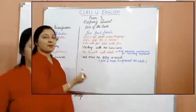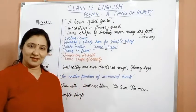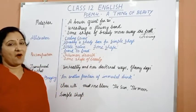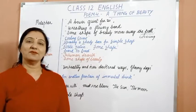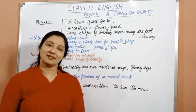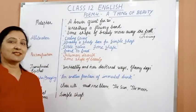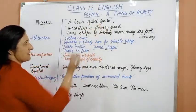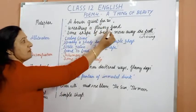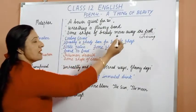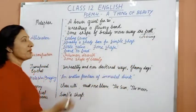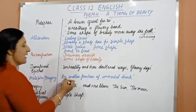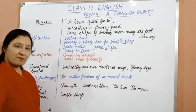Now let us move to Poem 4, 'A Thing of Beauty', written by John Keats. In this poem the poet talks about the impact of beautiful objects found in nature on us — they are a constant source of joy and remove the sadness of our hearts. Metaphor is used in expressions: 'a bower quiet for us', 'weaving a flowery band', 'some shape of beauty moves away the pall', and 'an endless fountain of immortal drink'.